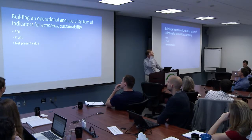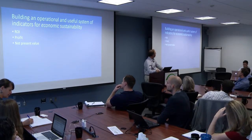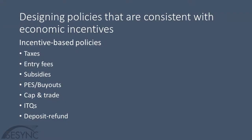For indicators of economic sustainability, folks are often interested in profitability, net present value, and discounting. Economists spend a lot of time thinking about command-and-control approaches to management versus incentive-based policies — when each is more appropriate and when incentives work more efficiently. The suite of incentive-based policies at our disposal includes taxes, entry fees, subsidies, payments for ecosystem services, buyouts, cap and trade, ITQs, and deposit refund systems, among others. We tend to favor policies that operate within the incentive structure people use in their decision-making.